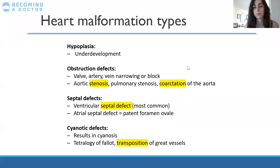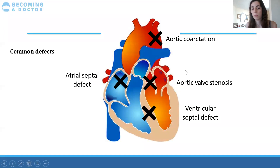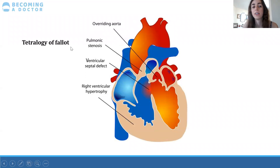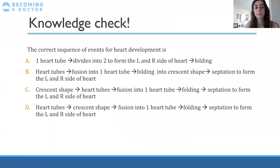Tetralogy of Fallot has four problems including an overriding aorta and right ventricular hypertrophy. You need to know these four problems by heart because they come up a lot in pediatrics.